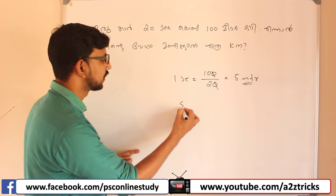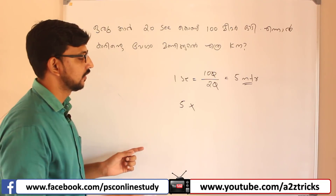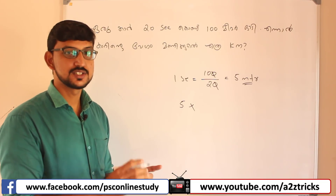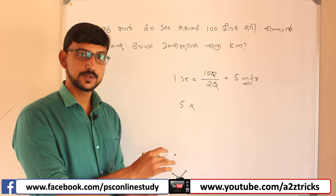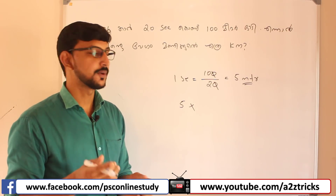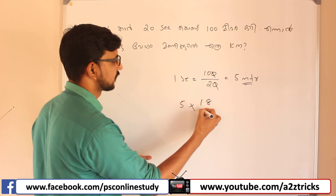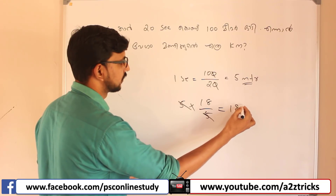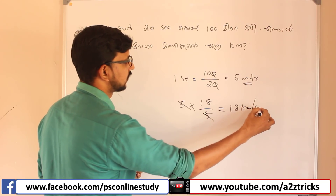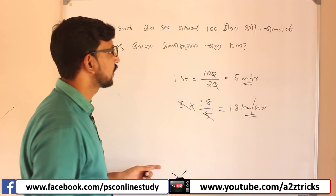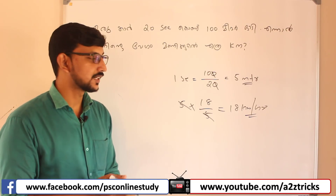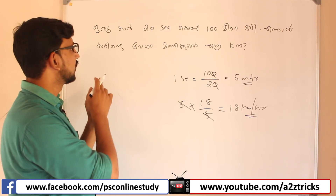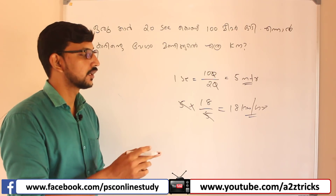Now if you make 5 m per square and make it a square, it is 18 by 5. So it is 18 by 5. The car is 18 km. Now we are going to do this. The car is 18 km.